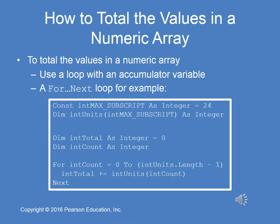Often you want to sum all the values in a numeric array. For this type of processing, we use a loop and an accumulator variable that starts out with zero. Each time we step through the array, we add the current element being inspected to the accumulator variable. This is most often done with a for next loop. Let's step through this coded example on this slide.